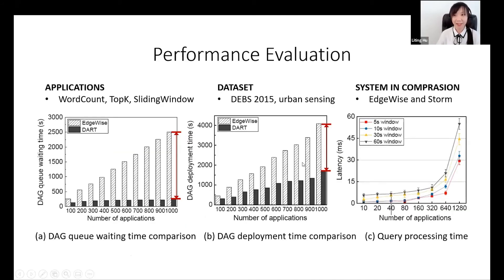We deploy a large number of applications simultaneously to demonstrate the scalability of our system. We compare DART with EdgeWise and Storm. Results show that DART significantly reduces the queue time and deployment time, especially when handling a large number of concurrent running applications. The gap increases as the number of concurrent running applications increases.